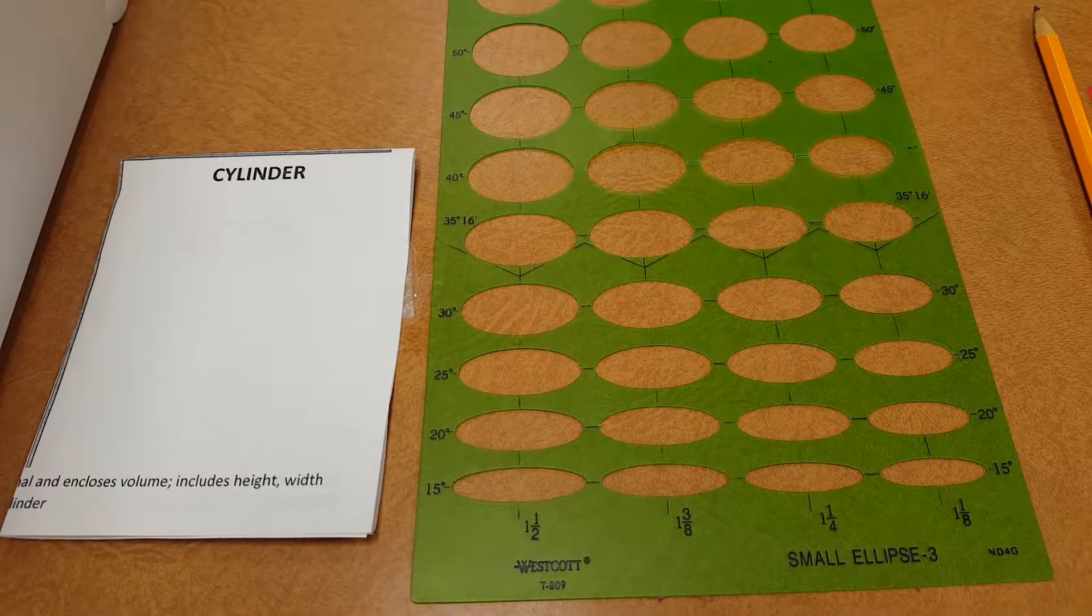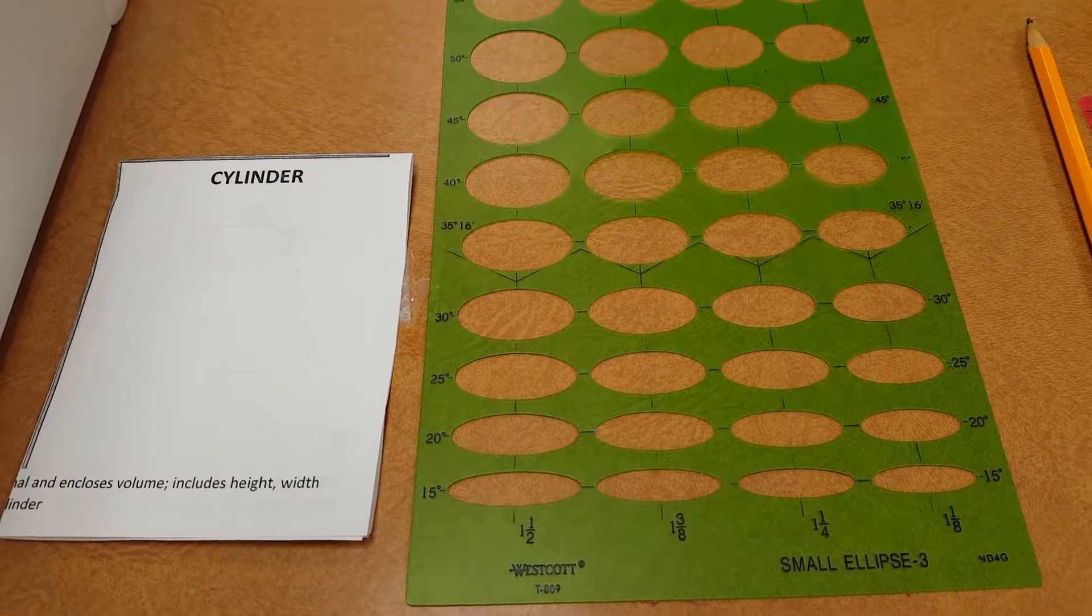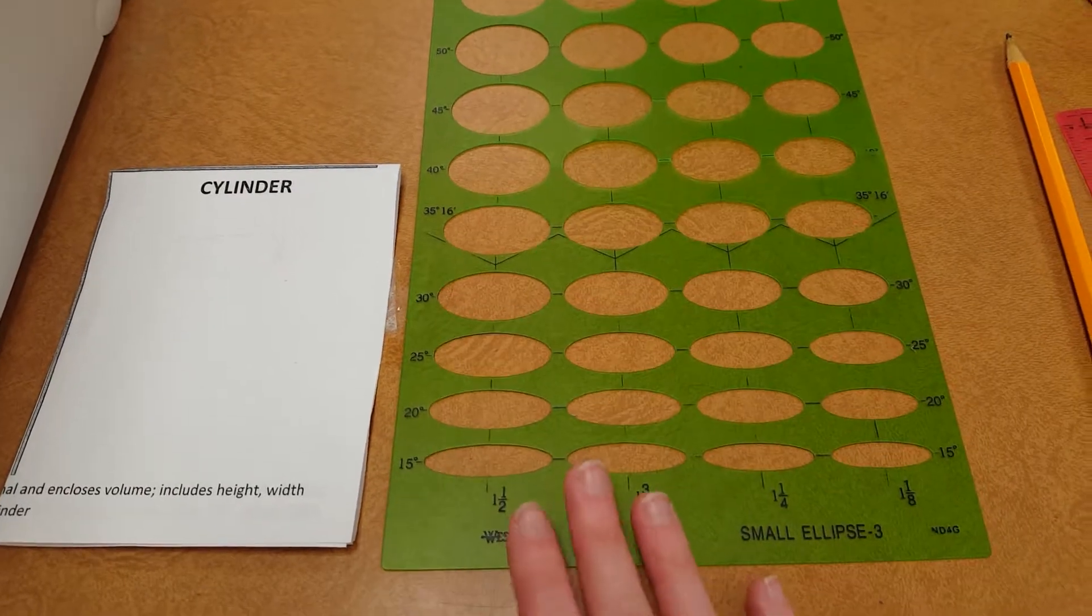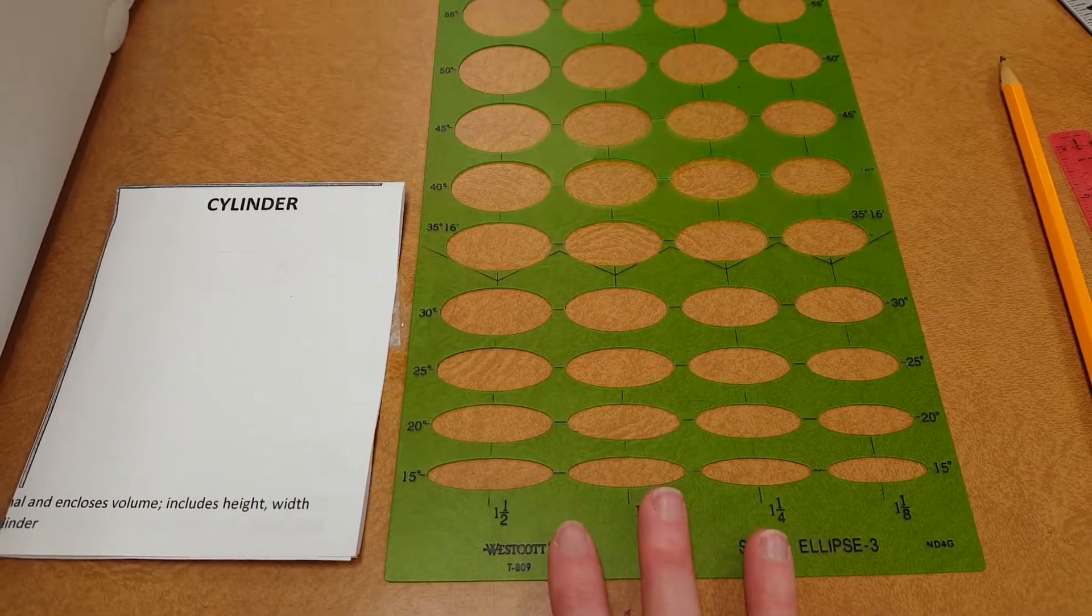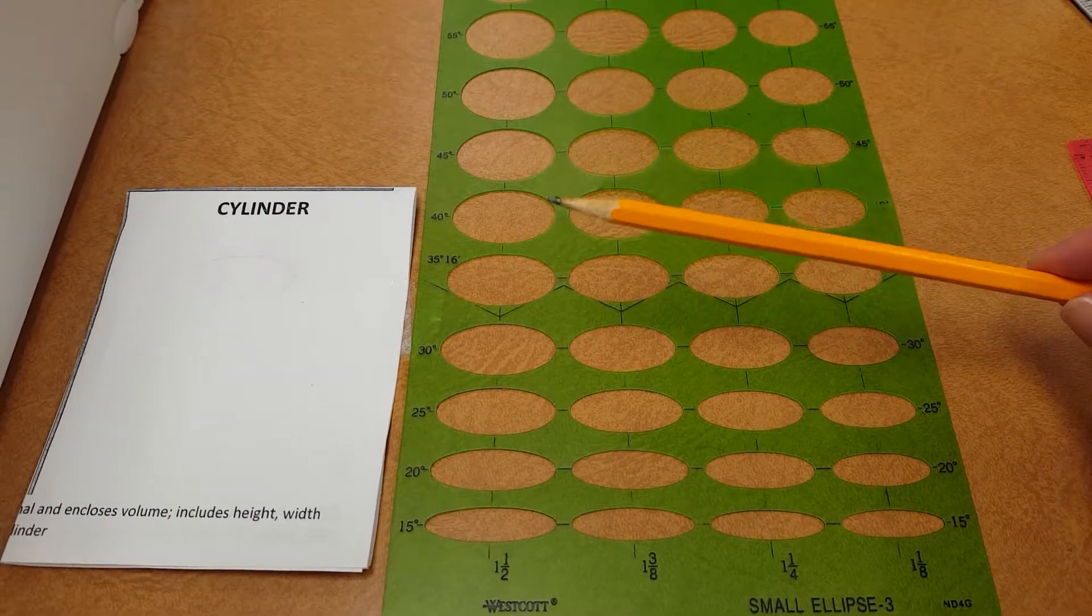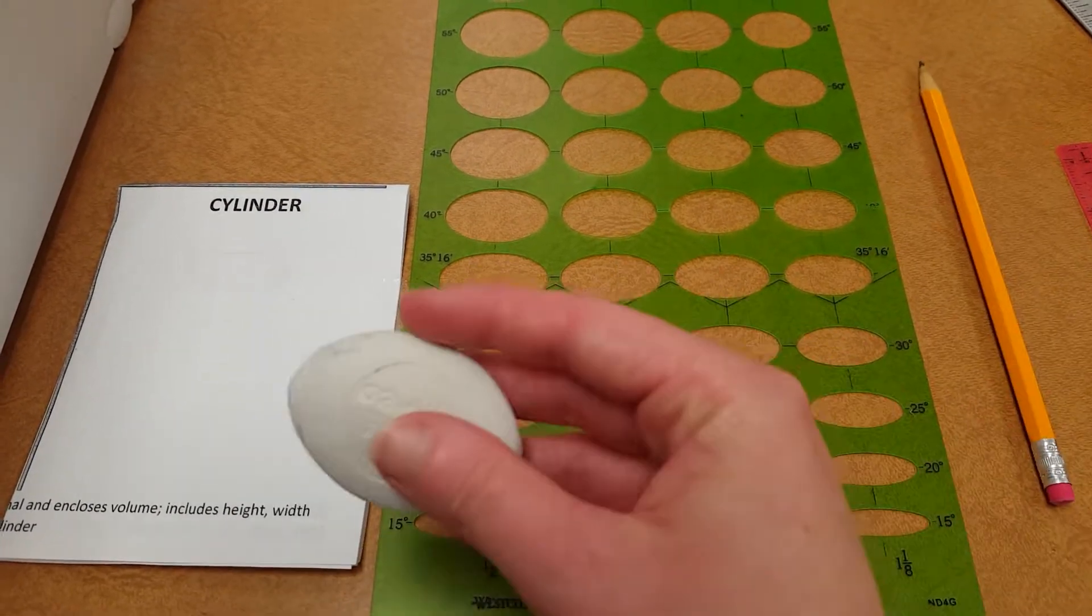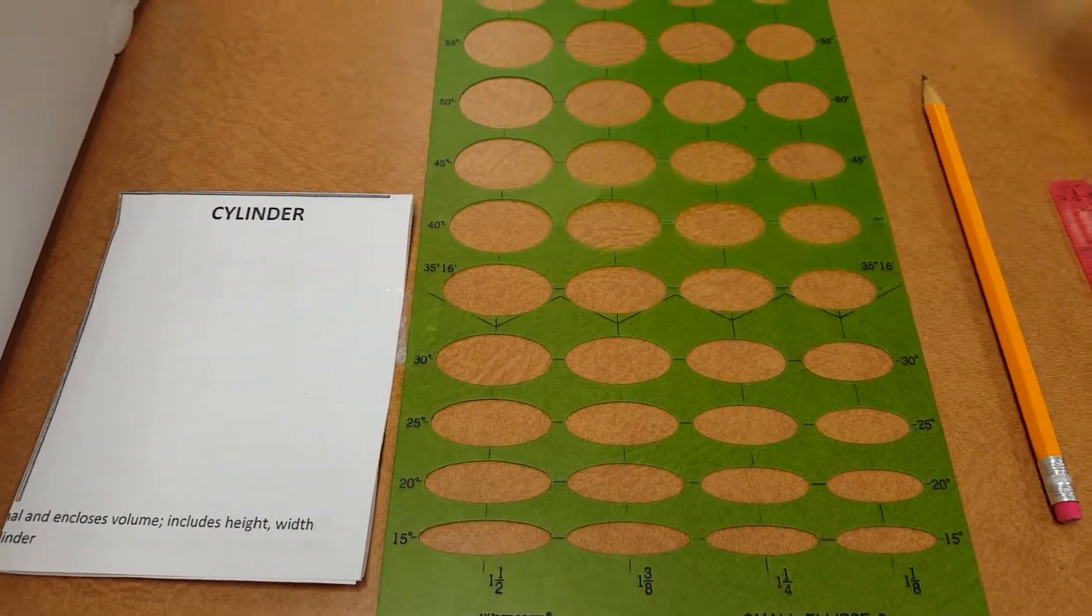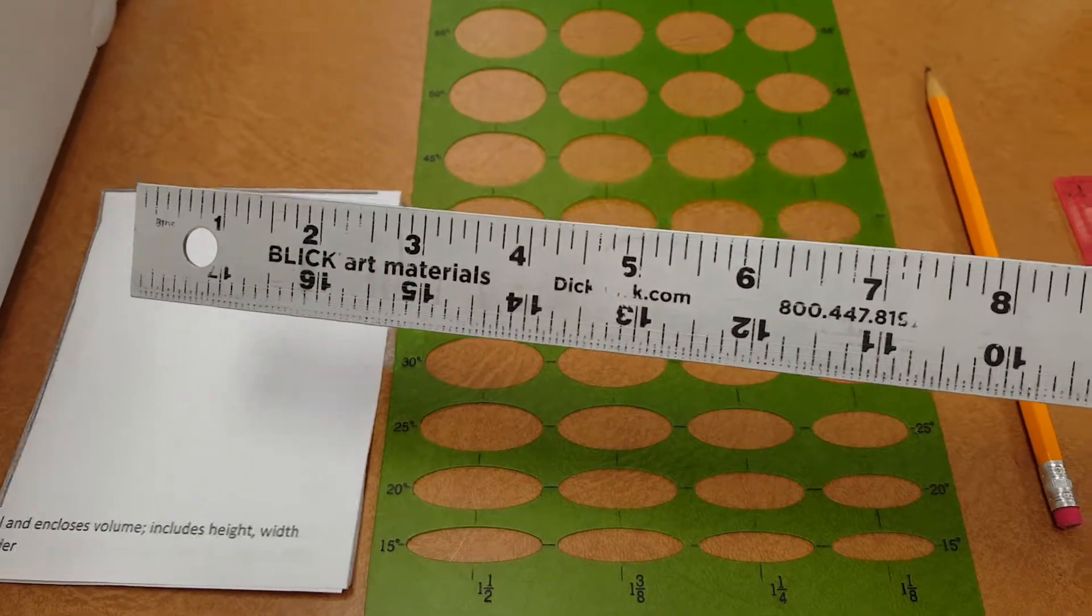To start sketching out your cylinder, you're going to use a couple of things before you get started. First things first, you have an ellipse maker right here which I'm going to come back to. You need a pencil that's sharpened up, you need a trusty eraser, and you're also going to need your ruler.